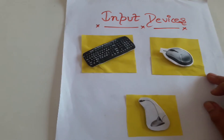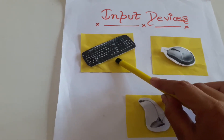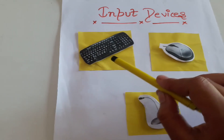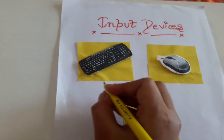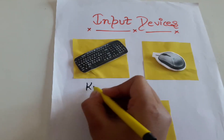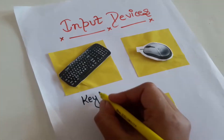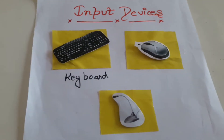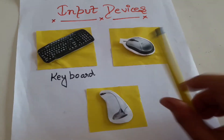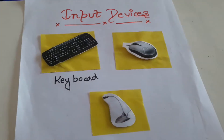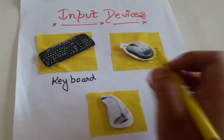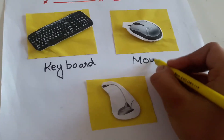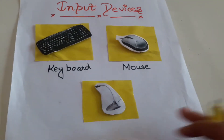Now tell me which device is this? Can you name it quickly? It is keyboard. I will write for you — keyboard. Yes, very good children. Now can you tell me which device is this? Yes, this is mouse. I am going to write. This is mouse.